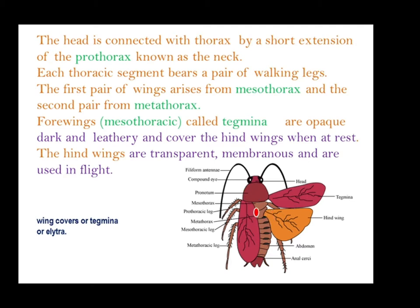The second pair of wings arises from the metathorax. Keep in mind the origin of legs and wings. Each thoracic segment bears a pair of walking legs — prothoracic, mesothoracic, and metathoracic. The first pair of wings arises from the mesothorax and the second pair from the metathorax.